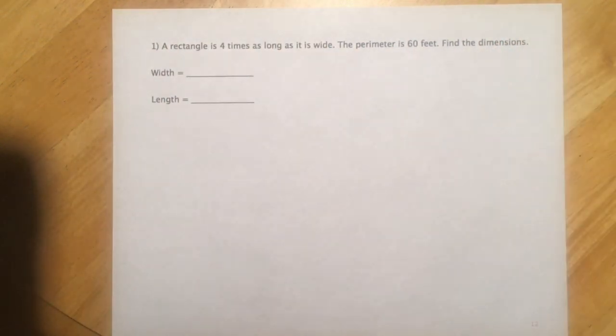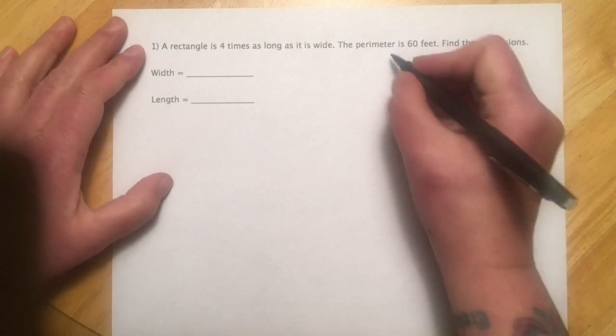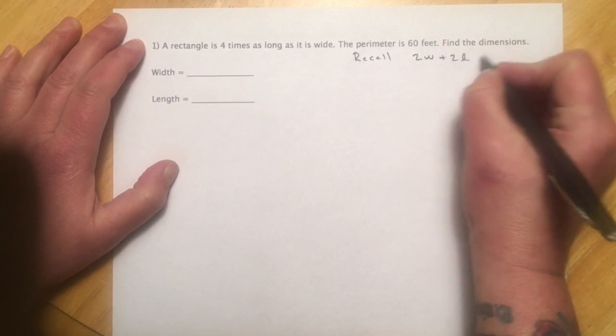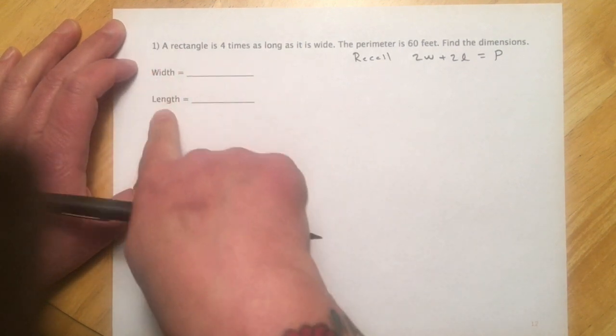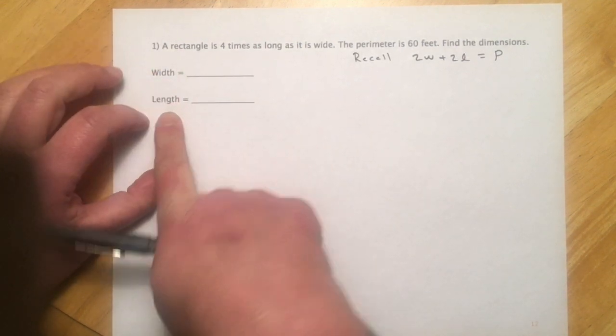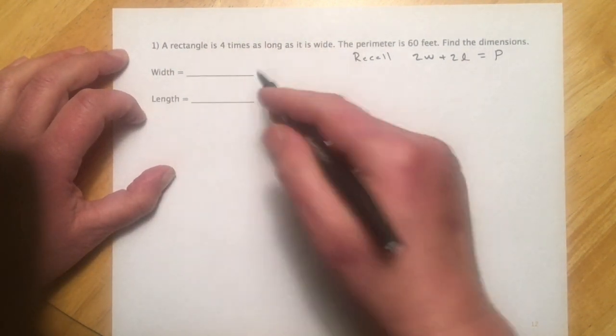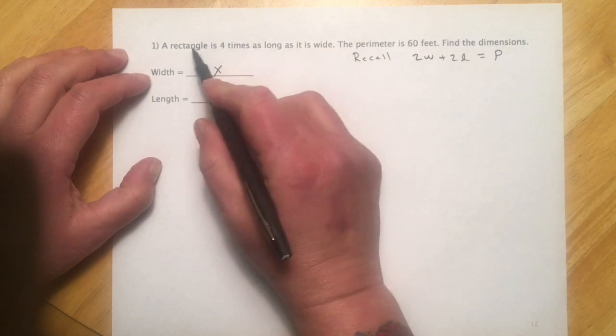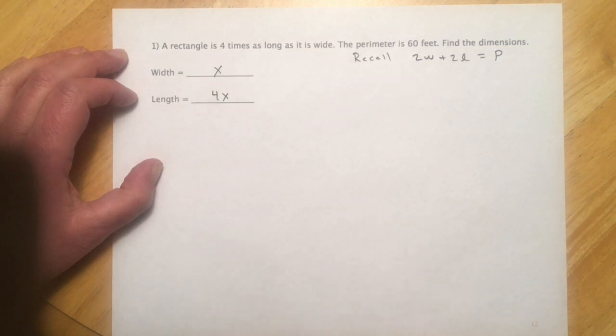So this first one goes: a rectangle is four times as long as it is wide, the perimeter is 60 feet, find the dimensions. On the exam it would have something like recall 2W + 2L equals the perimeter. So the rectangle is four times as long as it is wide. I'm going to let the width be x, and then it's four times as long, so 4x is going to equal the length.